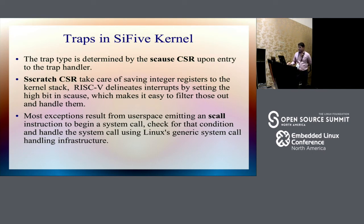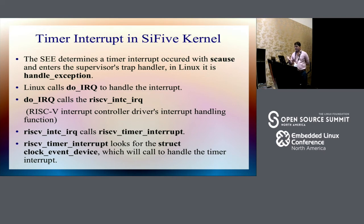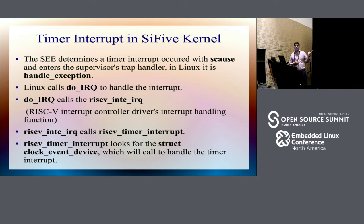S-cause CSR, S-call and S-scratch are a combination that determines what type of user space call entered the kernel, leading to S-return. For timer interrupts: the SEE (supervisory execution environment) determines a timer interrupt occurred via S-call and enters the supervisor's trap handler. In Linux that is handle_exception, which calls do_irq — a generic Linux IRQ call. do_irq then calls the RISC-V INTC interrupt handling function, which calls the RISC-V timer interrupt handler.